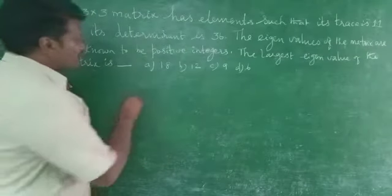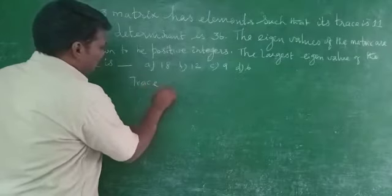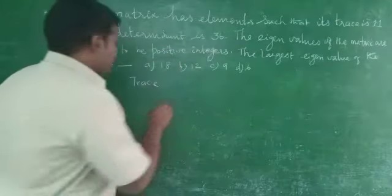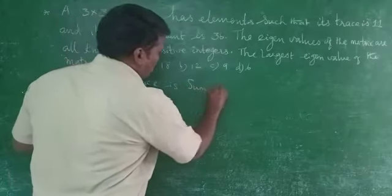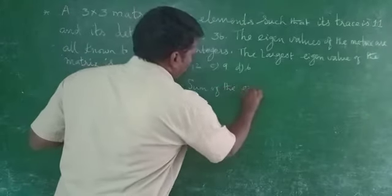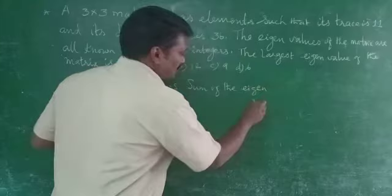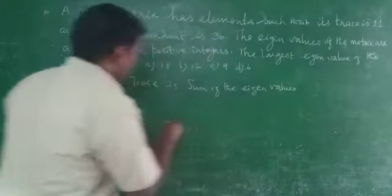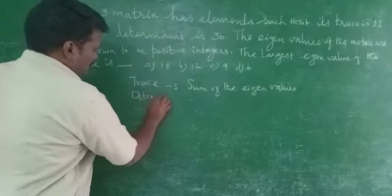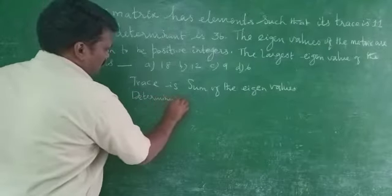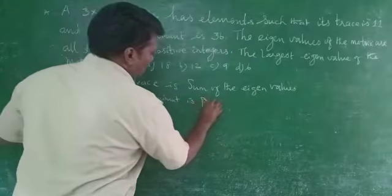The first one is trace. Trace is nothing but sum of the eigenvalues. Sum of the eigenvalues. And then, determinant is product of the eigenvalues.